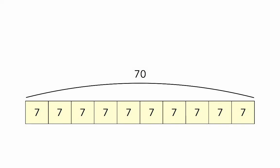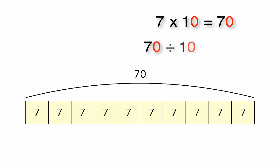Let's look at the number 70. We know that 7 times 10 equals 70. So, 70 divided by 10 equals 7. 7 goes into 70 ten times.